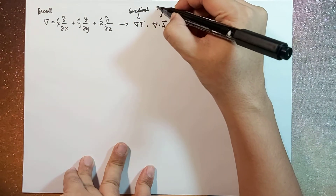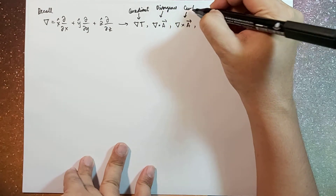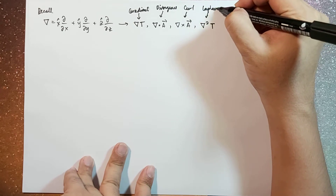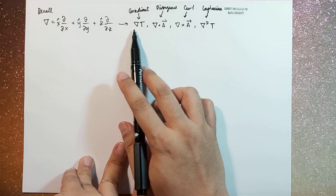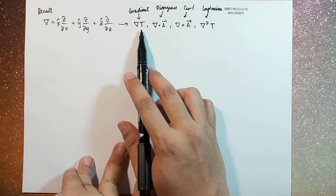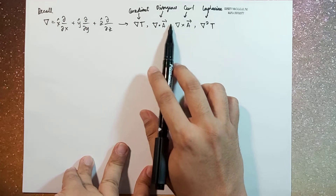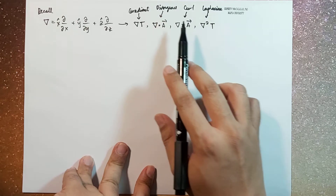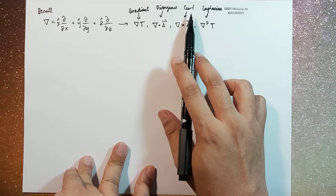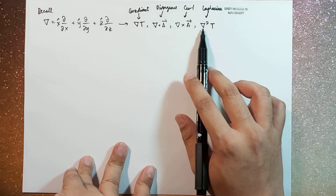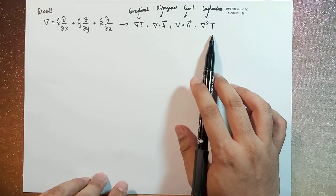We call del·A the divergence, del×A the curl, and del²T the Laplacian. So we don't call it del T — we call it the gradient of T. We don't call it del·A — we call it the divergence of A. Del×A is called the curl of A, and del²T is called the Laplacian of T.